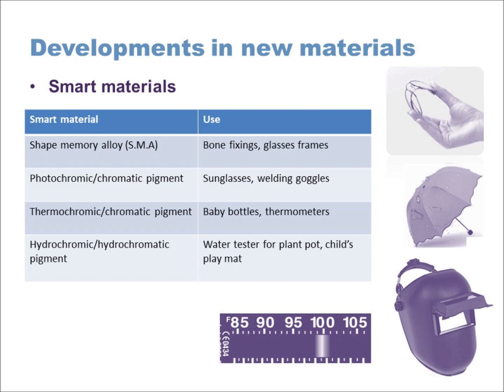Moving on to smart materials — the definition of a smart material is a material that will change according to its environment or an external stimulus. Those stimuli might be heat, water, electricity, pressure, or a range of other things. What makes it 'smart' is that it remembers its original state, so when that external stimulus is removed it will revert back to its original condition.